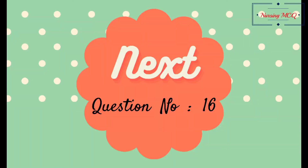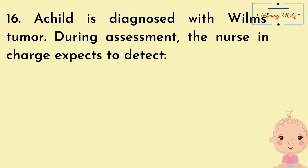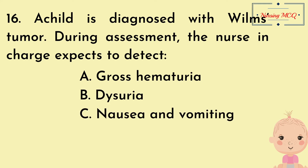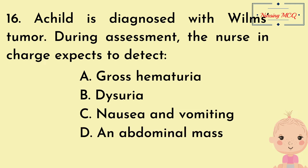Question number 16. A child is diagnosed with Wilms tumor. During assessment, the nurse expects to detect: Option A, gross hematuria; Option B, dysuria; Option C, nausea and vomiting; Option D, an abdominal mass. The right answer is Option D: an abdominal mass.